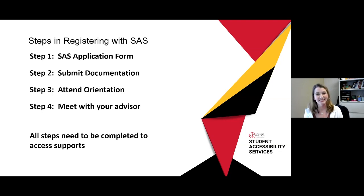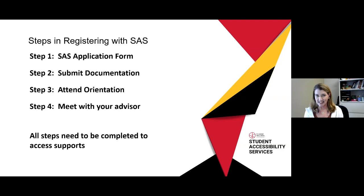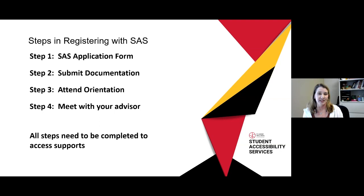There's a question: is there a deadline to register with SAS? In order to access accommodations for the fall, it's important to submit your application and documentation by June 15th — that gives us enough lead time to have everything in place for the start of semester. However, you can register throughout the summer. If you're connecting with us for the first time at the end of August or early September, we might not be able to get those accommodations in place right away. So the sooner you do it, the better.